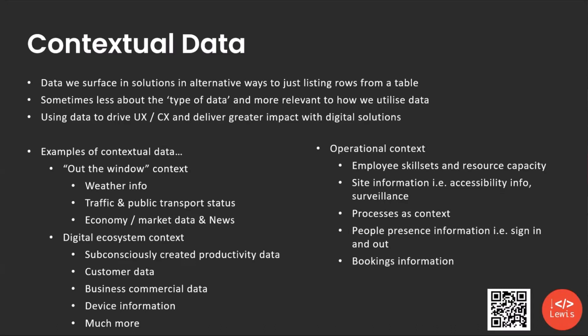Then we've got a third category: operational context. That's stuff like our employees' availability, their skill sets, whether our different company sites are accessible — have they got accessible entrances, have they got surveillance running. Different processes we use in our organization, like how our resources are booked. This is a bunch of different data we might use in our business, wider than our organizations, and we can use it inside our solutions to deliver impact by using this data contextually.